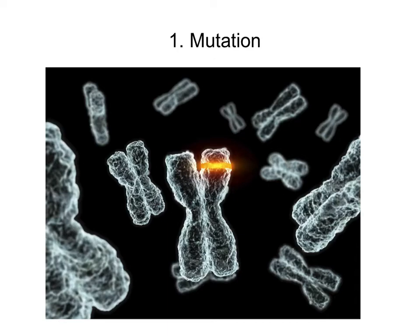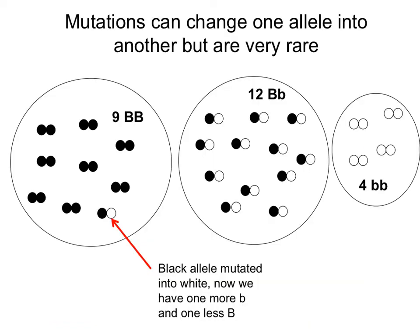If you have a mutation, you're changing the genetic code. Going back to our population of cats, if one of the black alleles in the population mutates and becomes inactive so it can no longer produce color, and as a result it has become a white allele — now the population has a different proportion of alleles. If we started with nine individuals that were homozygous black, now one of those has become a heterozygote, or their offspring will be a heterozygote, so the proportion of the alleles has changed.